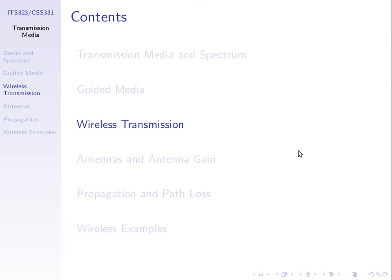We've already given some examples of guided or wired media: coaxial cable, twisted pair, optical fiber. Now we want to talk about wireless media. We've already mentioned examples of wireless media — Wi-Fi, TV broadcasts, satellite communications.